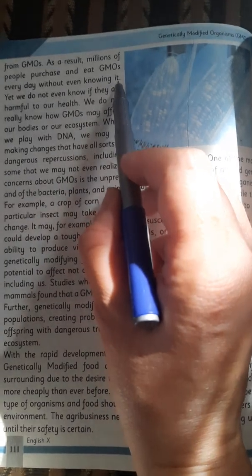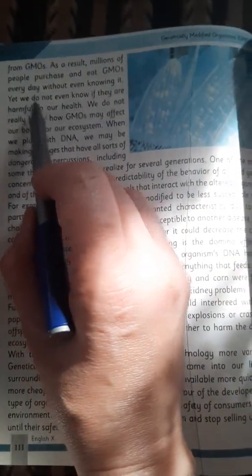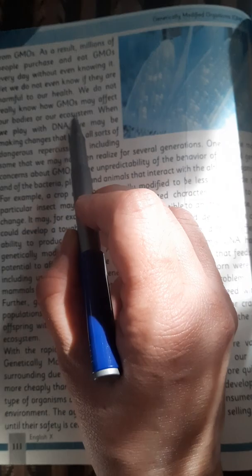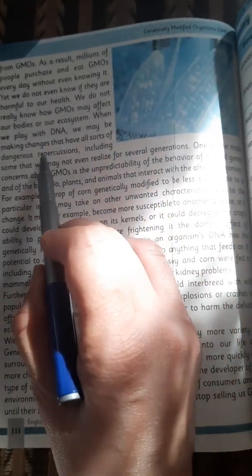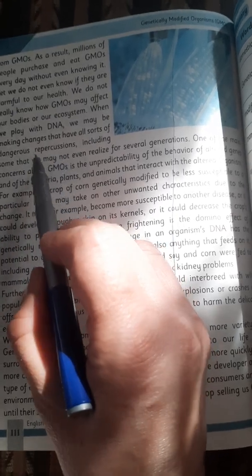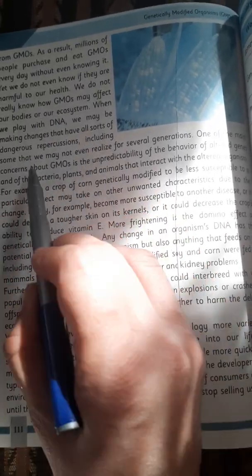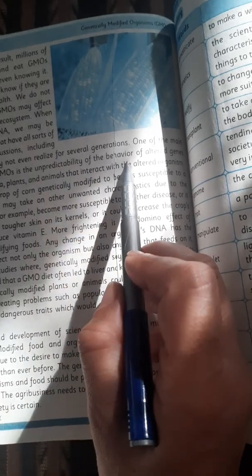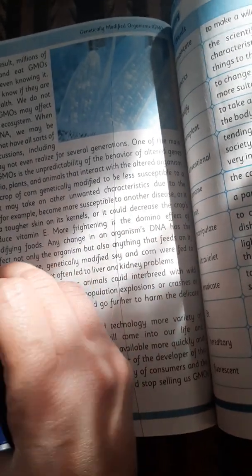As a result, millions of people purchase and eat GMOs every day without even knowing it. Yet we do not even know if they are harmful to our health. We do not really know how GMOs may affect our bodies or our ecosystem. When we play with DNA, we may be making changes that have all sorts of dangerous repercussions, including some that we may not even realize for several generations.